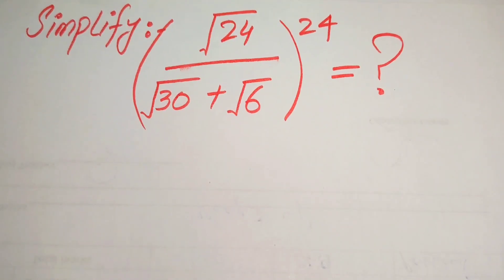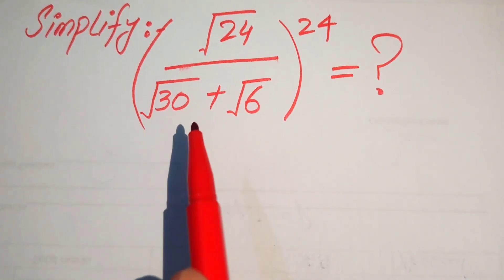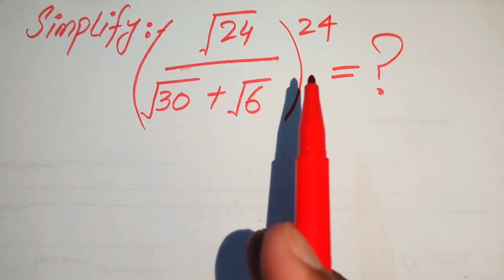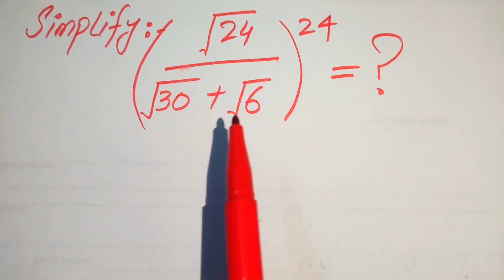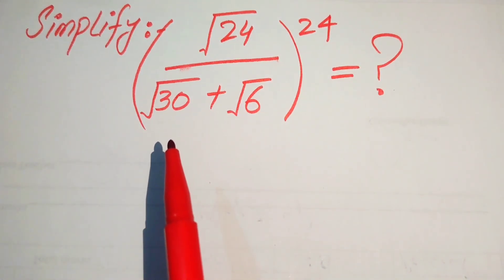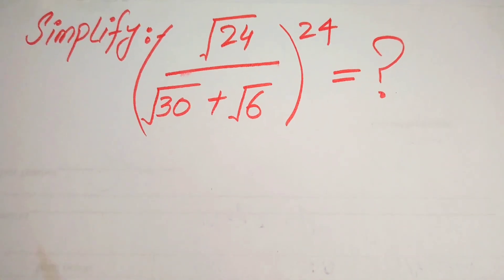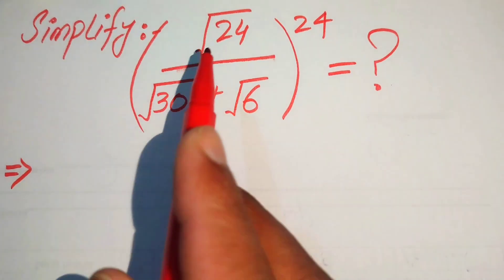Hello everyone. How to simplify this nice algebraic expression: the square root of 24 over the square root of 30 plus square root of 6, and its whole power is 24. We write this into simplified form without using the calculator — calculator is not allowed in this question.